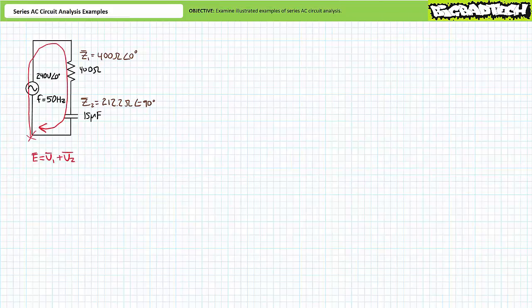A Kirchhoff's voltage law analysis of this loop within this series circuit suggests that E equals V1 plus V2. Additionally, given there is a single path for current in this series relationship, it can be stated that source current IS equals current through element one, which equals current through element two. If we solve for current through any element, we by extension also solve for current through the remaining element as well as source current.